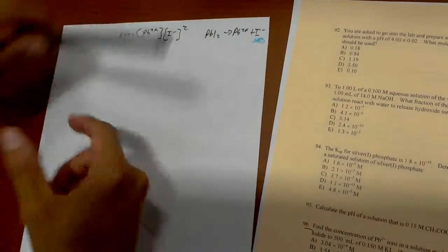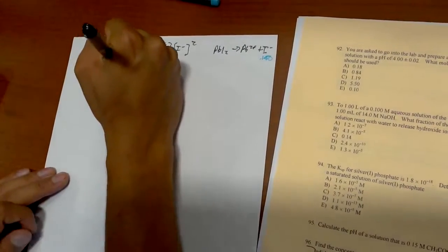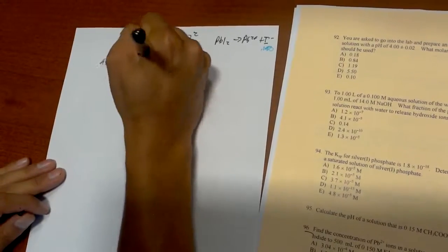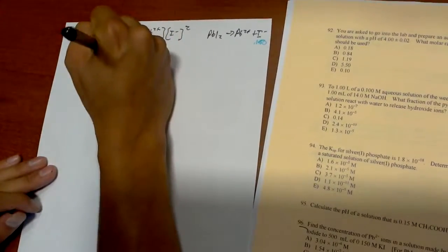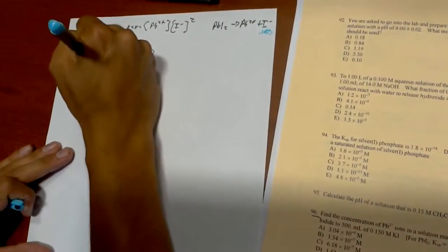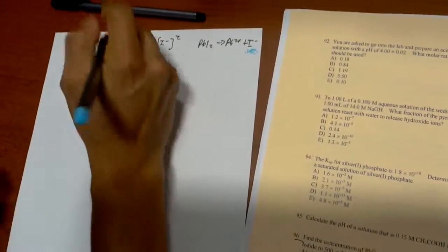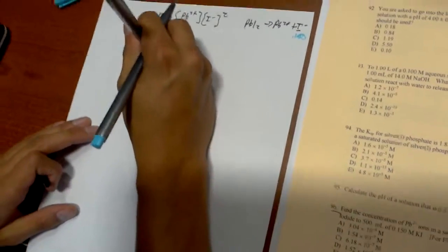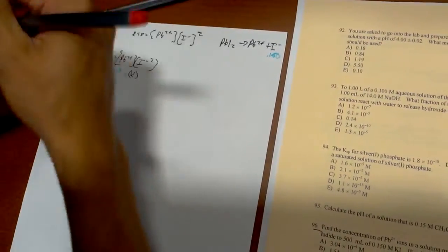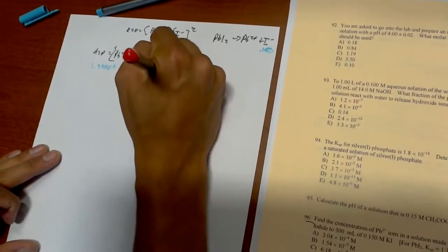Okay, since they gave us the Ksp, we can go ahead and write this out. Ksp equals Pb²⁺ times I⁻ squared. And let's go ahead and put these together. So 1.39 times 10 to the negative 8 equals x, and then 0.15 mol plus 2x.